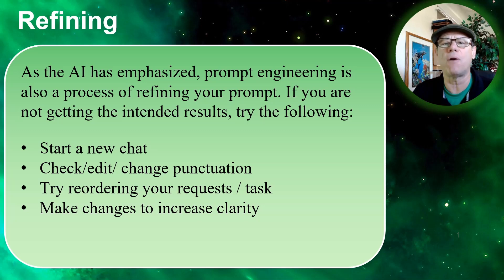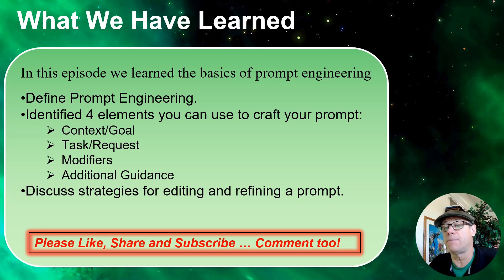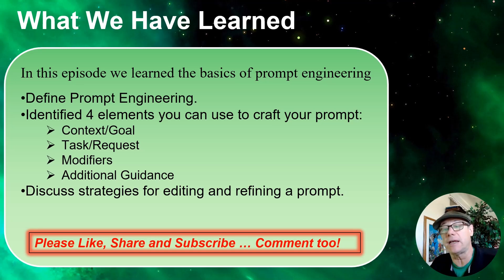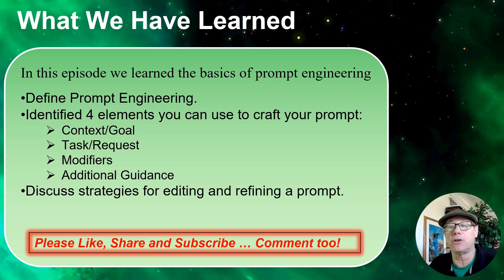Now let's wrap things up and talk about what we've learned. In this episode we learned the basics of prompt engineering — we defined what it was, both I did and the AI did. I identified four elements used to craft prompts: context and goal, such as given this science standard or you are my history tutor; the task and request — what document do you want built, what do you want to be tutored in; modifiers — what's the output going to look like, bullet point, tabular, or CSV format; and additional guidance — what is the tone, the level of complexity, or you could ask it to present your document in Spanish. Then we talked about strategies for editing and refining our prompts. I hope you liked what you learned today — please like, share, subscribe, and comment. Thank you very much for your time.